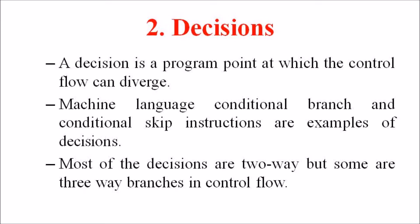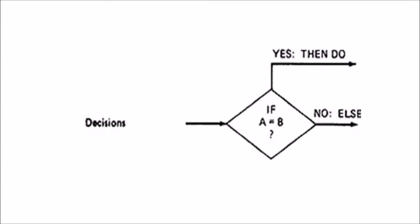In the graphical representation, a decision is represented in a diamond in which all the decisions are written within the diamond and the outcome of the decision are two-way, but in some cases these outcomes are also three-way branches.